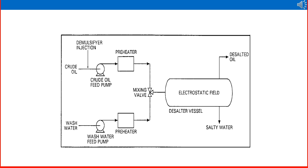The mixing valve properly mixes the crude oil and the fresh wash water, and then it enters a horizontal type separator — the desalter vessel. In that vessel, high voltage electricity is provided to create an electrostatic field, which breaks the emulsion. The desalted oil is separated from the top, and the salt water is released from the bottom of the separator.